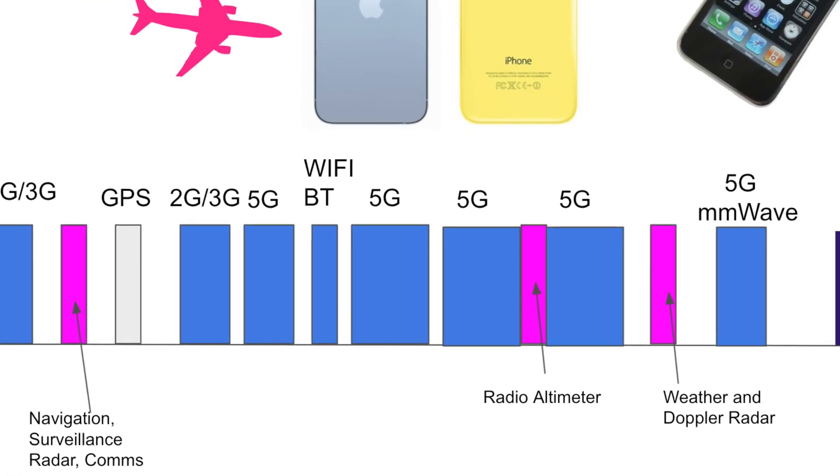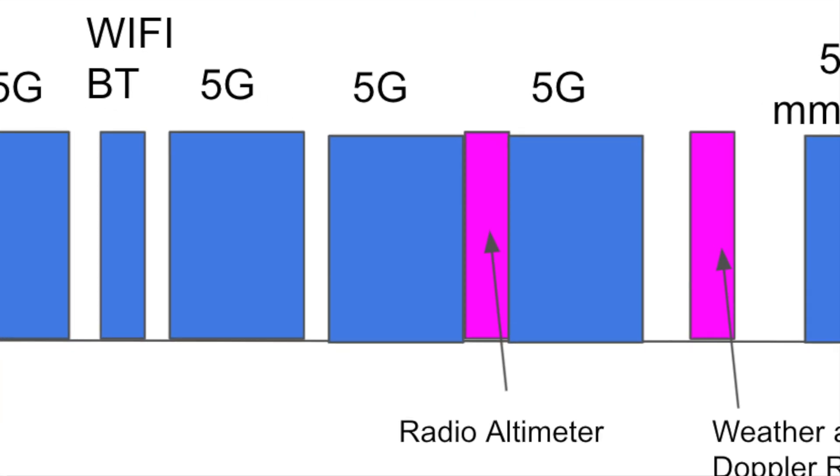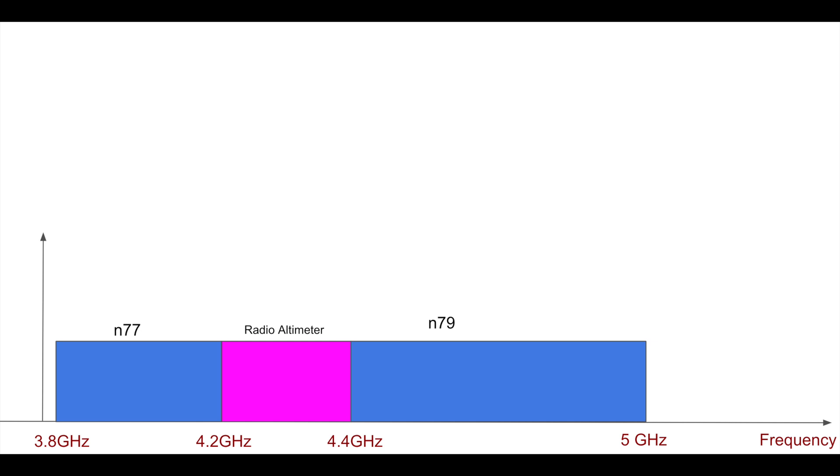But if we zoom in right now on the radio altimeter, that's at about 4.2 to 4.4 gigahertz. It turns out there's two 5G bands on either side of that. And they give bands stupid names like N77 and N79, and these butt right up against the airplane's radio altimeter. And so the FCC's job is actually to limit this. So they say you can transmit this much power within the band. So for instance, the N77 transmitter, and you have to transmit much less or below some very low threshold outside of that band. So the FCC will set this and everything should coexist nicely.